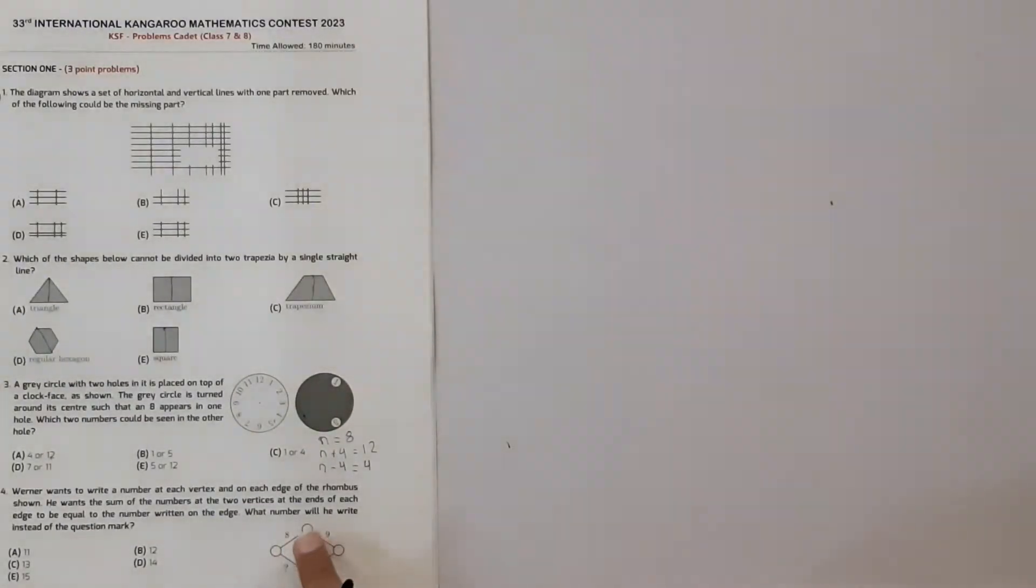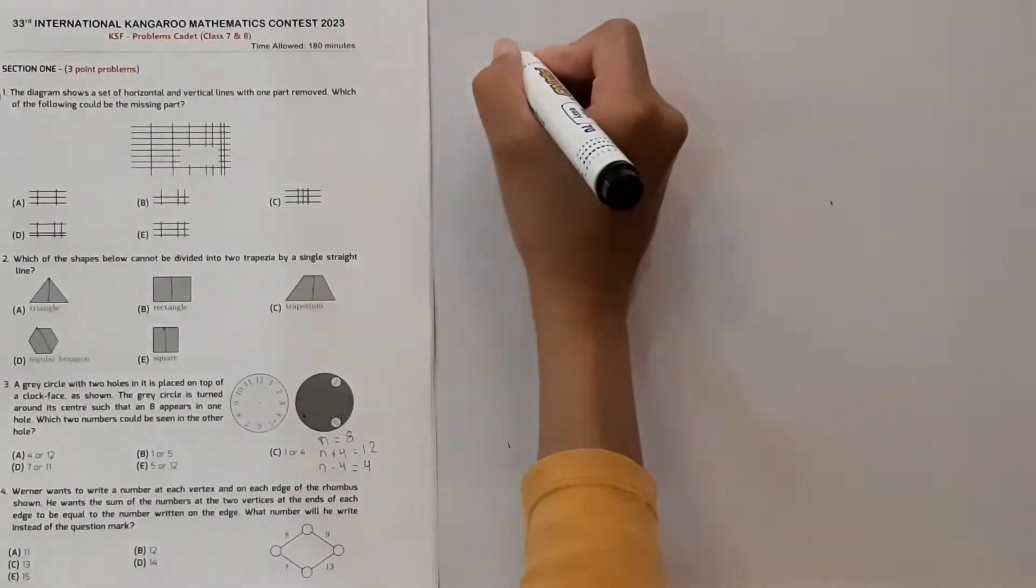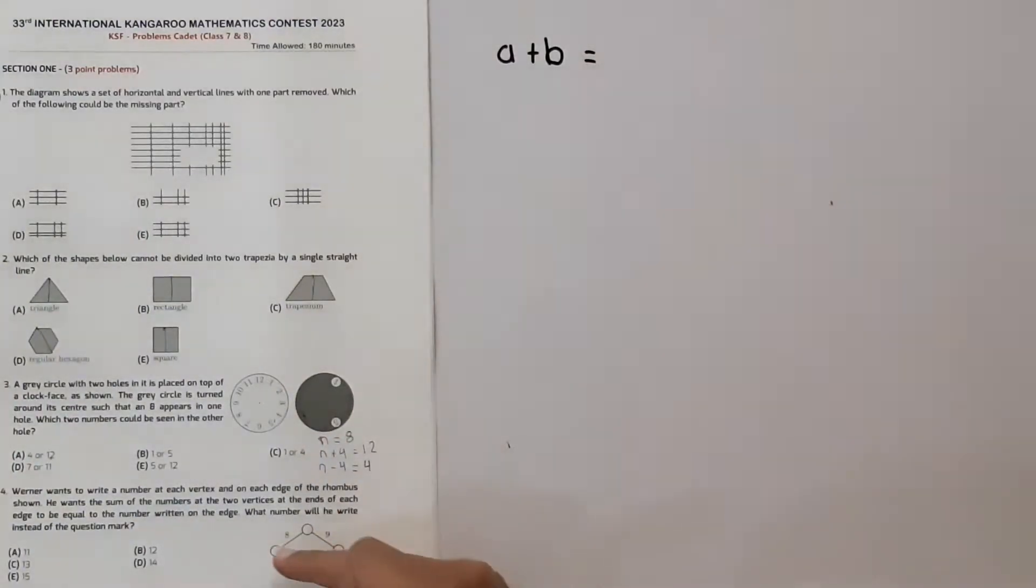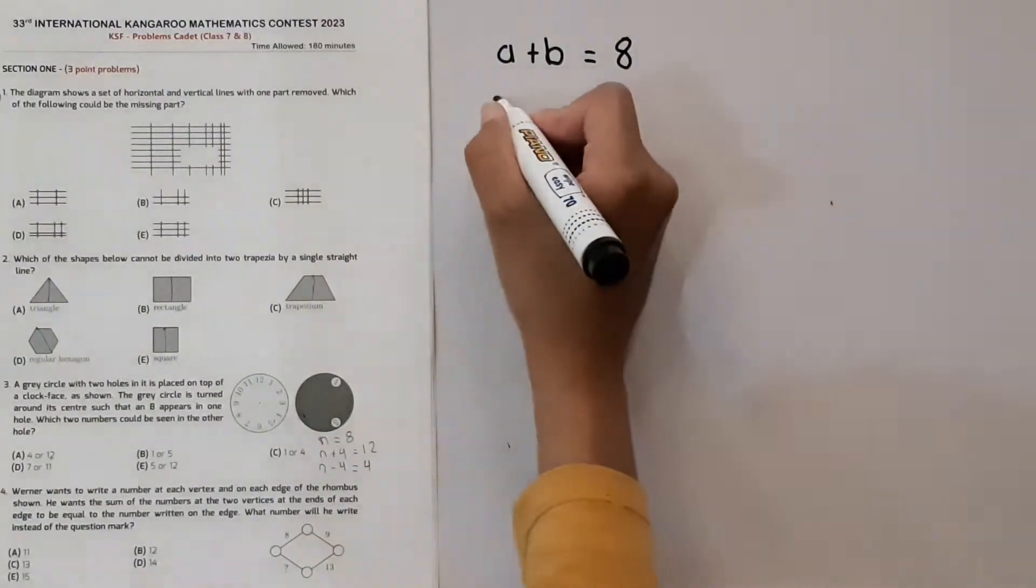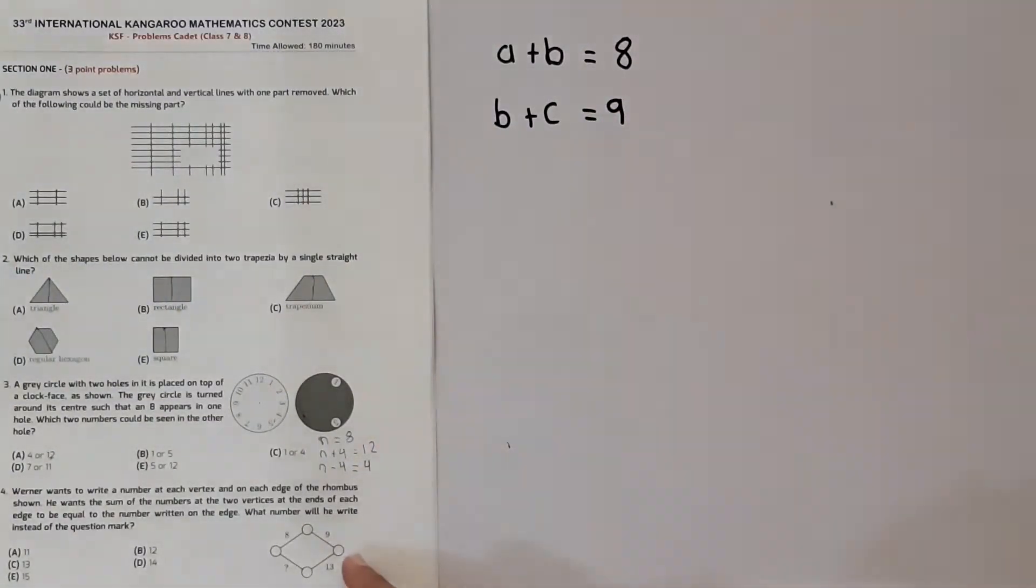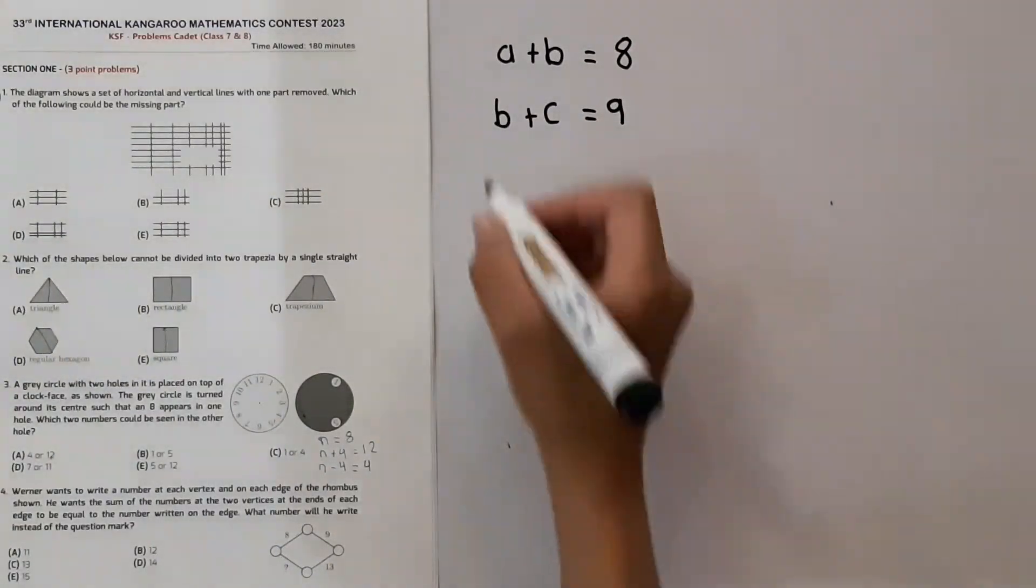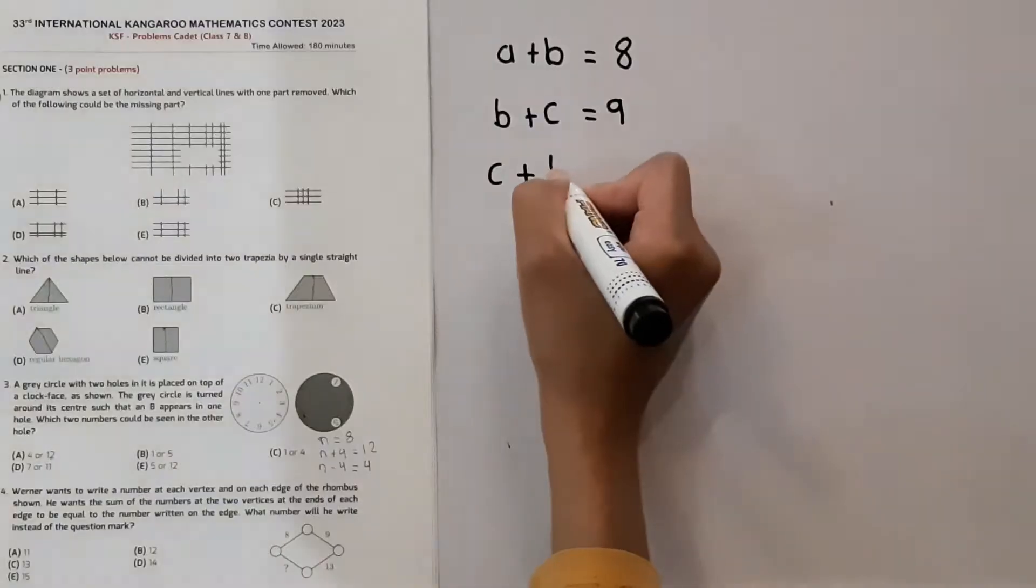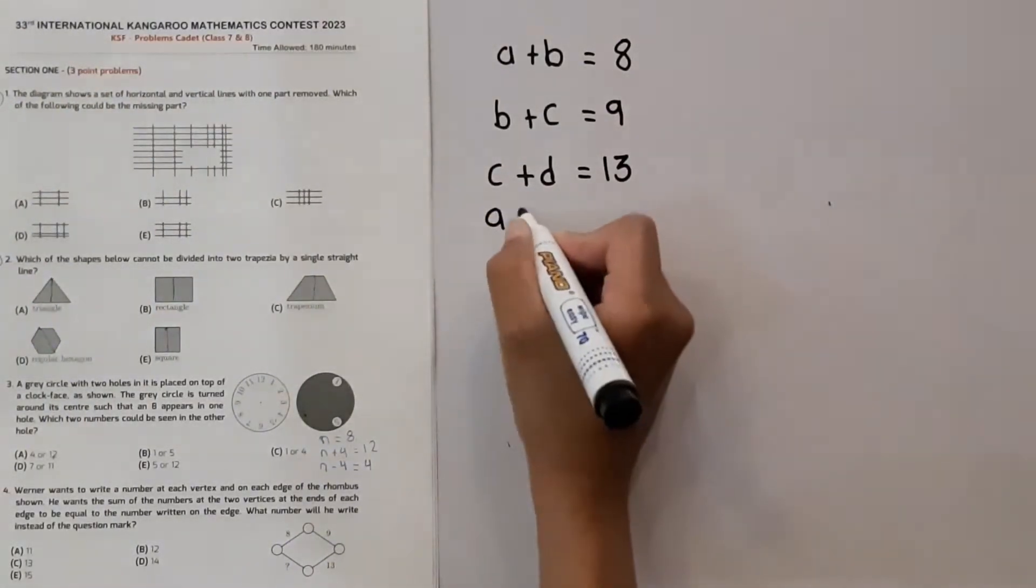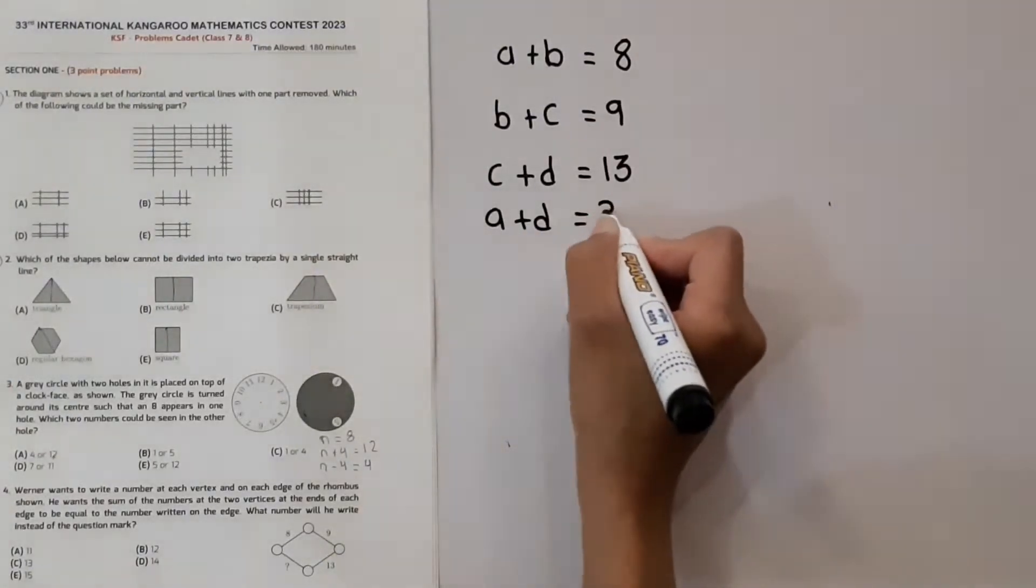So A plus B is equal to 8. As we can see A plus B is equal to 8 and B plus C is equal to 9. We can see C plus D is equal to 13. And we have to find A plus D.